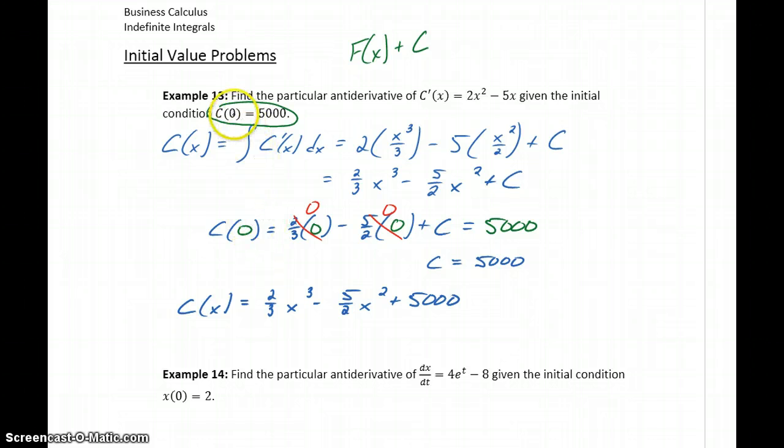So in this case, given that initial condition, this initial information about our function, make some substitutions, and then solve for that value c so that we get a specific function that has this precise value rather than some arbitrary constant.